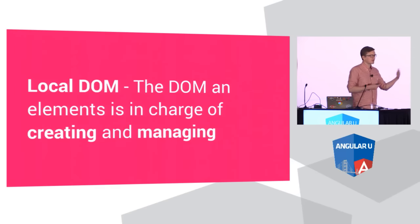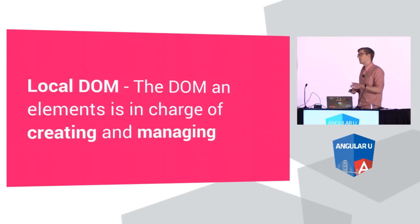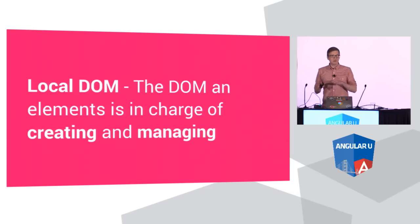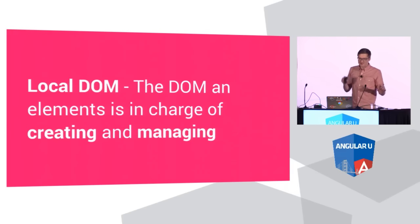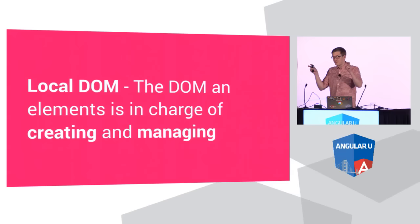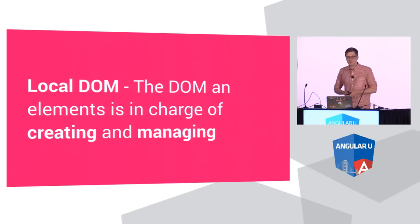Anything I put inside that template is what's going to render on page when someone uses an instance of my tag — we refer to all that content as your element's local DOM. Some of you might be familiar with the term shadow DOM — local DOM is basically the same thing. It's all the internal encapsulated private markup that your element is in charge of creating and managing. In Polymer 1.0, we stopped using the shadow DOM polyfill and started using our own much lighter weight shim, which we call shady DOM. We combined the terms and just call it local DOM.